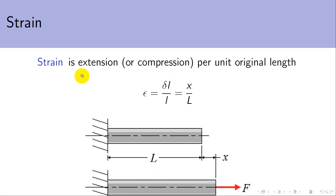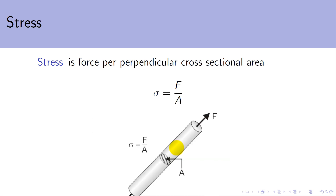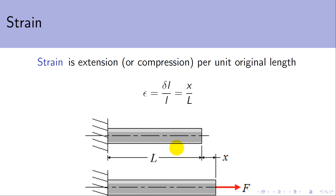Strain is the extension — when talking about tensile strain — or compression — when talking about compressive strain — per unit original length. So we take some material that starts off with some length L, stretch it out a little by applying a force so it increases its length by some extension, and to work out the strain, we do this change in length divided by the original length. Stress and strain are looking at how much force there is compared to the size of the object, and how much extension there is compared to the size of the object — taking into account the size, shape, width, and length of the object.